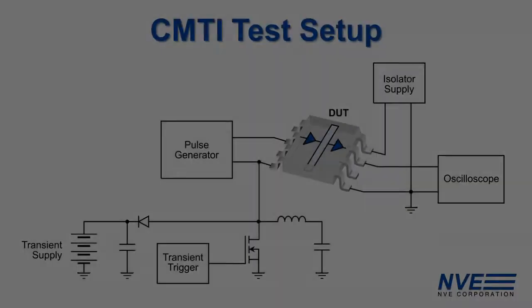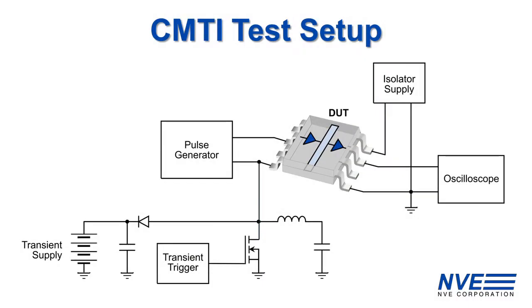This is a simplified schematic of our test circuit. The circuit creates a rising slope transient. A similar circuit can be used for the falling transient. When the MOSFET turns on, the transistor source charges to a high potential, creating a voltage transient with a known slope.